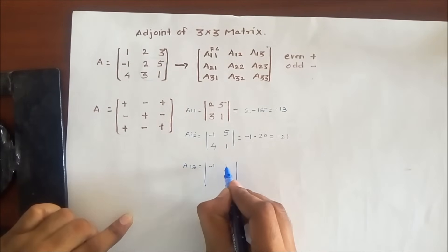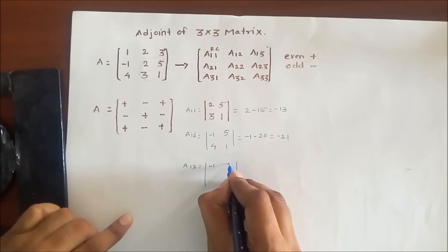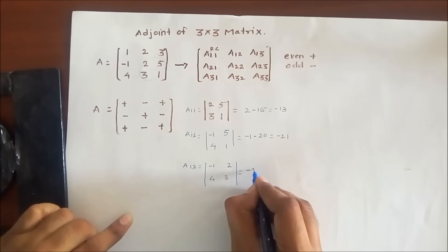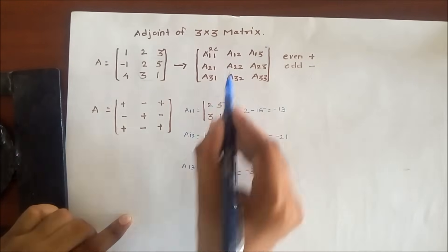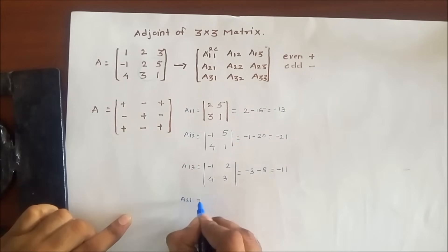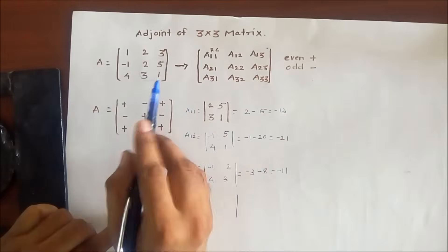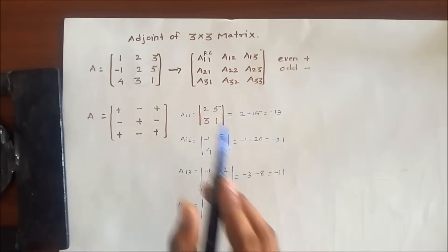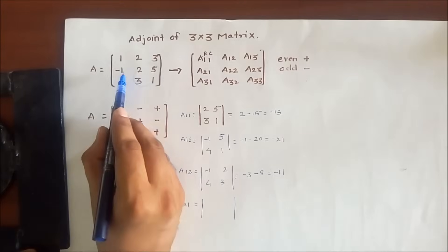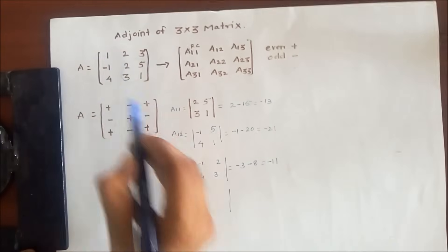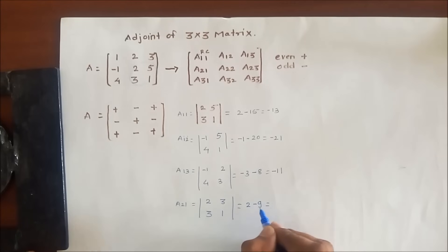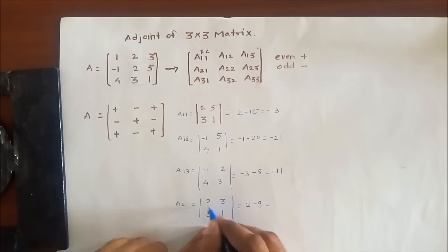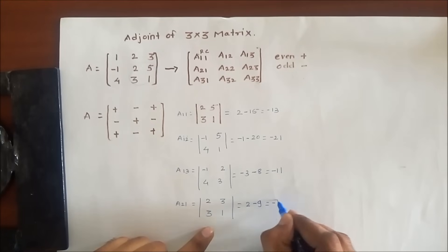For A13, hiding row 1 and column 3, we get [-1, 2; 4, 3], giving minus 3 minus 8 equals minus 11. For A21, we have to hide the second row and first column, then we get [2, 3; 3, 1], giving 2 minus 9 equals minus 7.